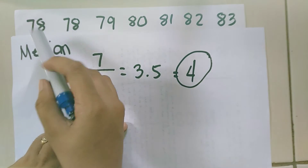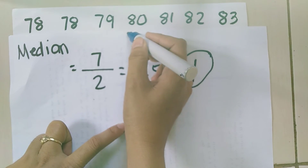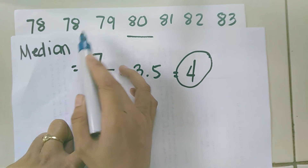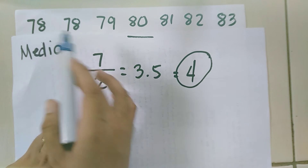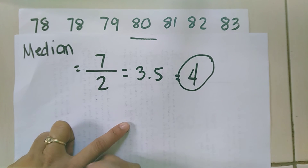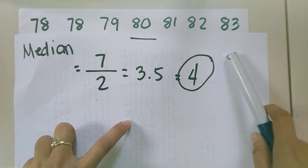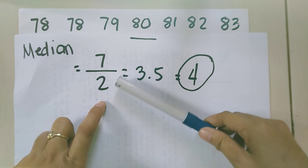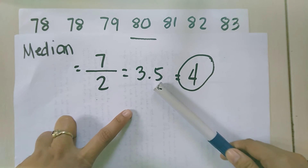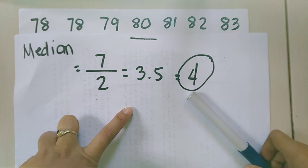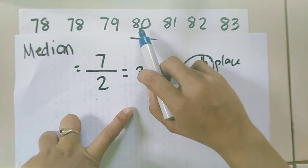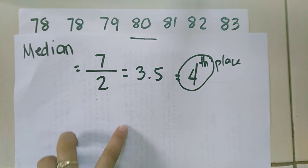Let's find the 4th place: 1, 2, 3, 4 — that is 80. We have 3 data at the right side and 3 data at the left side. So our median, the value in the middle, is 80. Since our number of data is 7, we divide by 2 to get 3.5, round off to 4, and the 4th place is 80. So our median is 80.